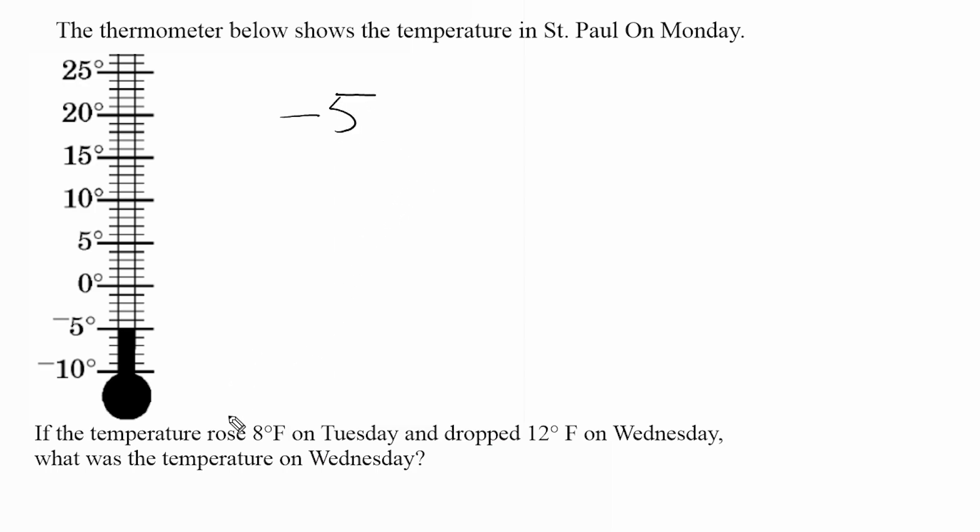Now the temperature rose eight degrees on Tuesday, that means it increased eight degrees, which is a gain, so that's a positive integer. And on Wednesday it dropped 12 degrees, and a drop is a negative or a loss of 12 degrees.